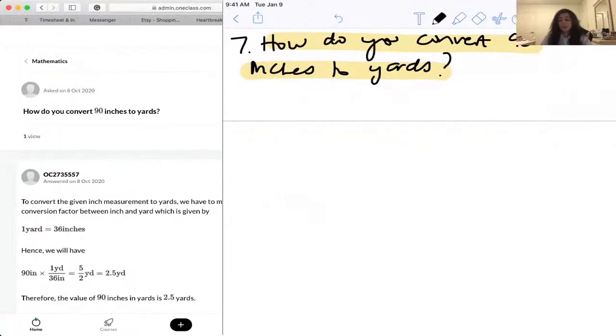So this is a simple conversion question. All we need to know is the conversion factor. One yard is equals to 36 inches.